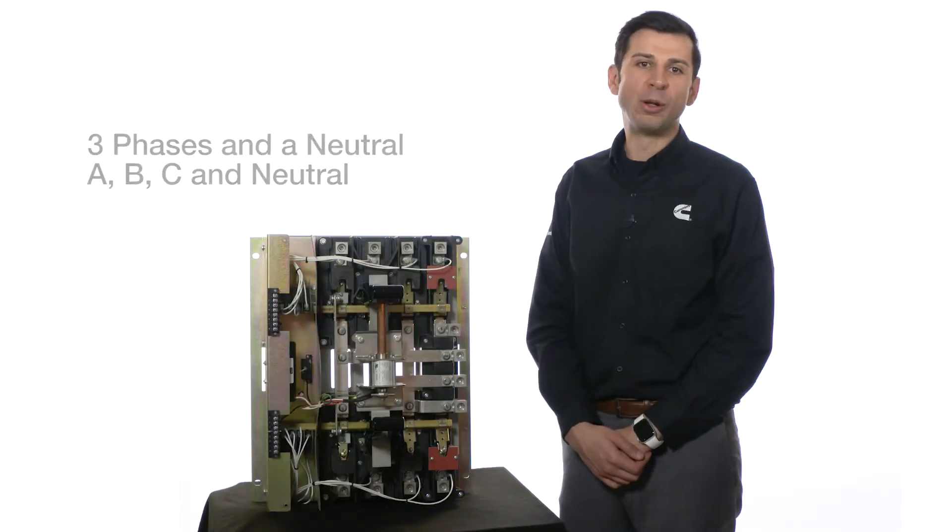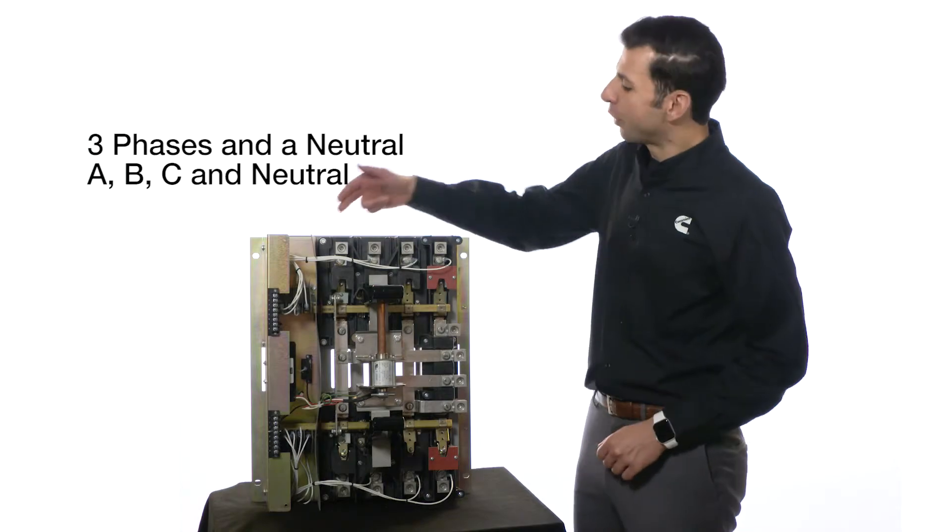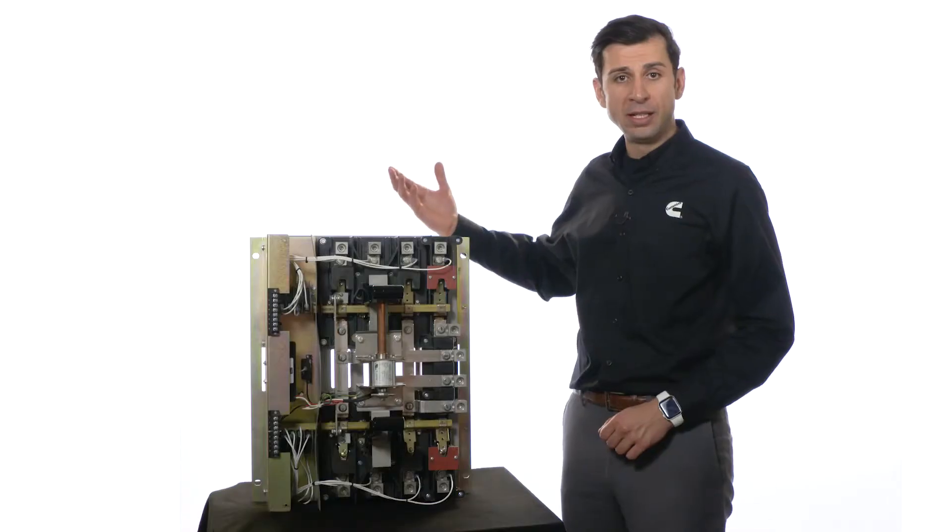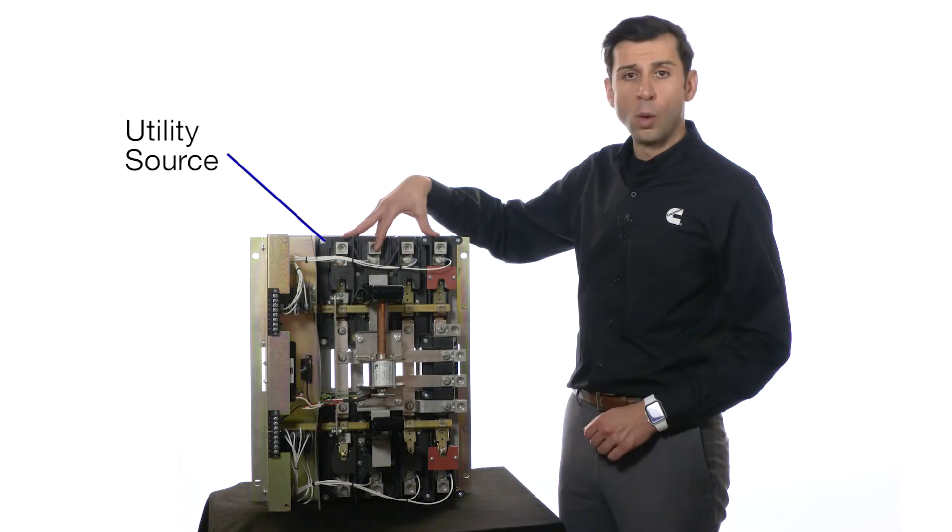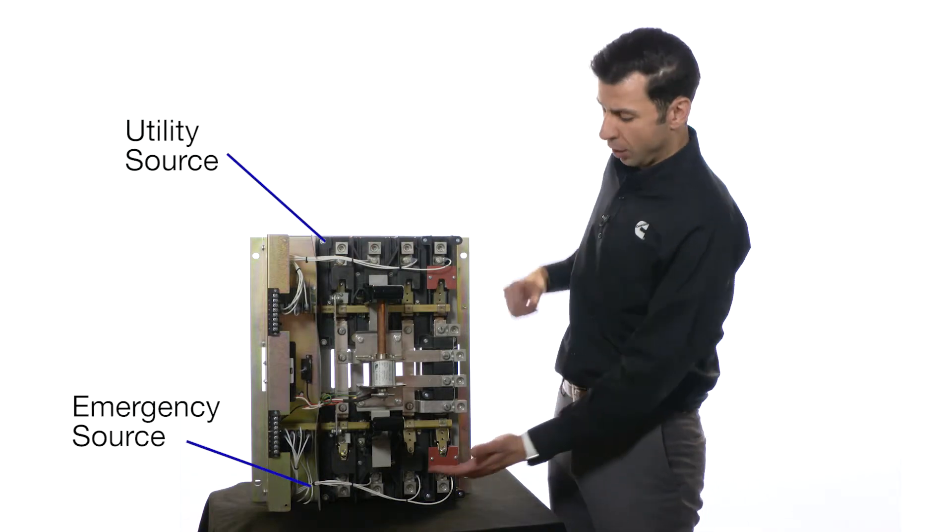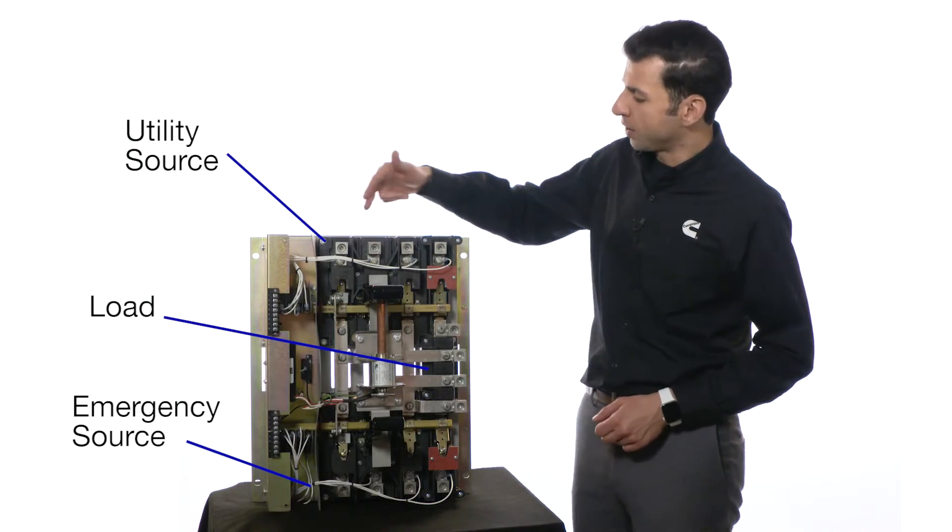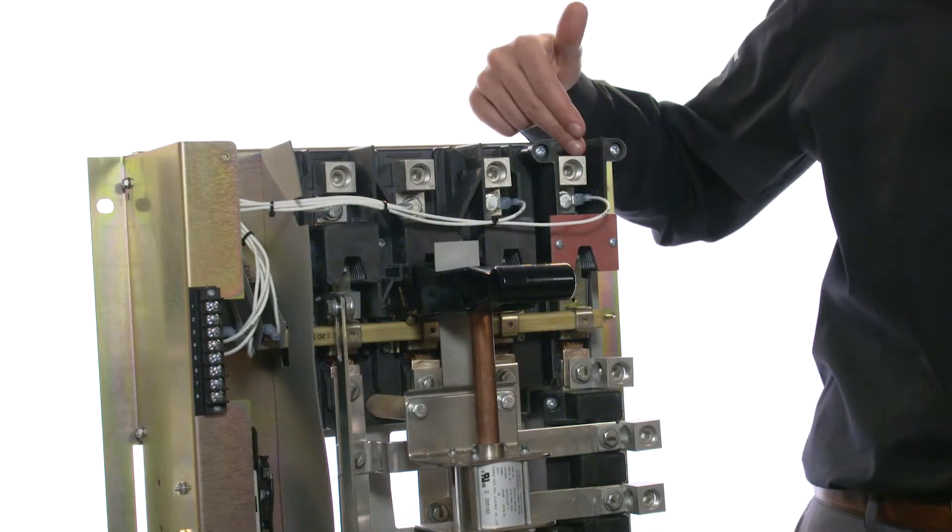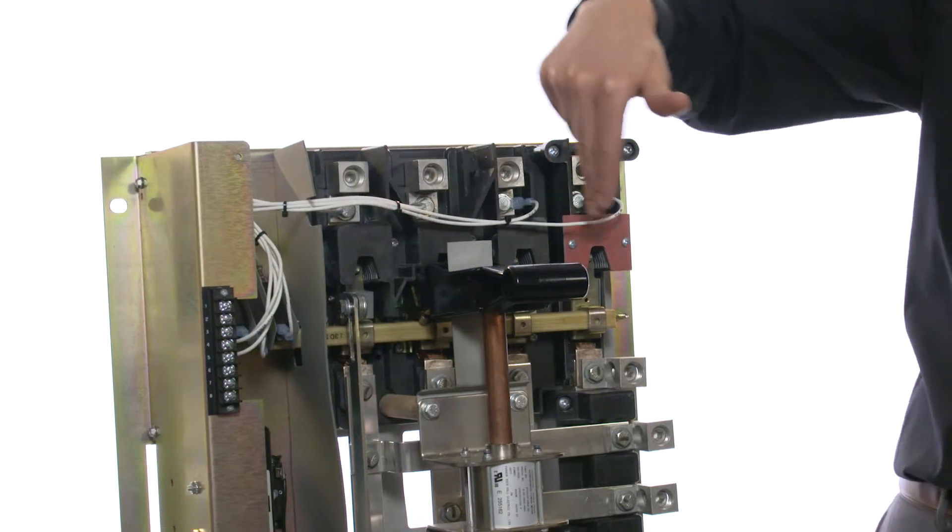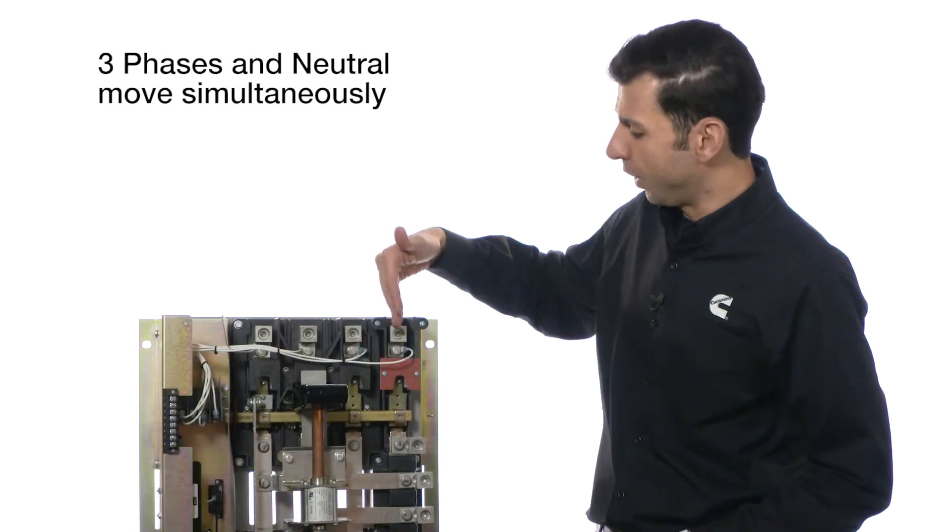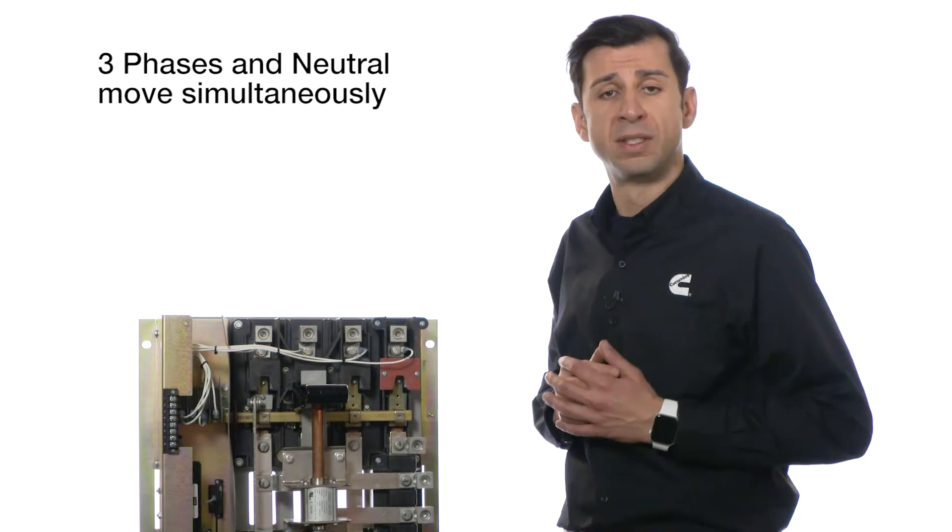This transfer switch is a four-pole, three-position transfer switch: three phases and a neutral, A, B, C, and neutral. The utility can be connected on this end, while the emergency source can be connected on this end, and the loads are fed from this end. Notice how the three phases and the neutral are connected to the same connecting rod, so when the transfer switch transfers, all three phases and the neutral are moved simultaneously.